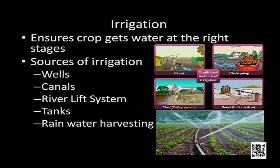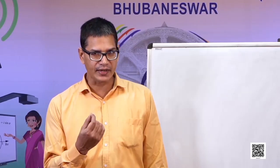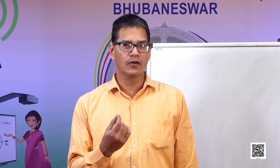Most agriculture in India is rain-fed, but monsoon is uncertain. Poor monsoon can ruin the crop. Therefore, to ensure crops get water at the right time, we need irrigation. Sources of irrigation in India are wells, canals, river lift systems, tanks, and rainwater harvesting. For sustainable practices, we must adopt rainwater harvesting.